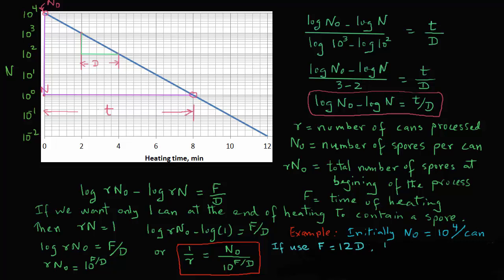Then 1 over r equals n0 is 10 raised to power 4, and in the denominator, we have 10 raised to power, and for f, we write 12d and then divide it by d. So on the right hand side, we are left with 10 raised to power minus 8. In other words, 1 over r equals 10 raised to power minus 8.